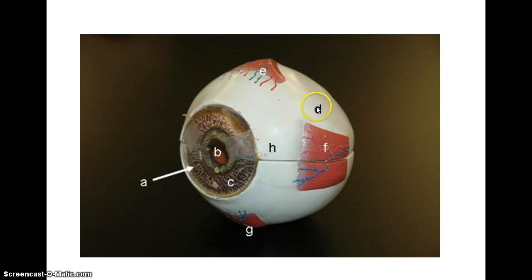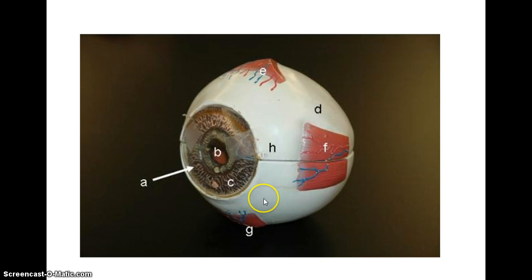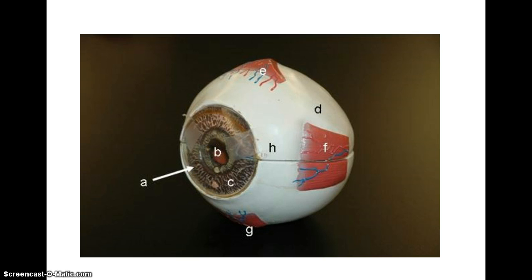Other structures you can see on this model are the sclera, which is the white part of the eye. The conjunctiva is very difficult to point to, but it's a layer of tissue that covers the sclera and then attaches at the cornea. Each faculty member will tell you how they're going to test you on that, because it's hard to pinpoint on the model since it covers the sclera.